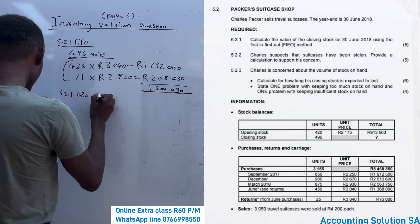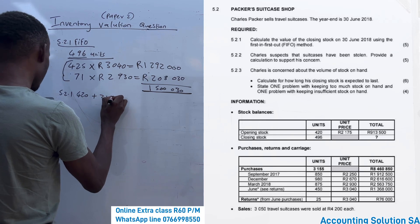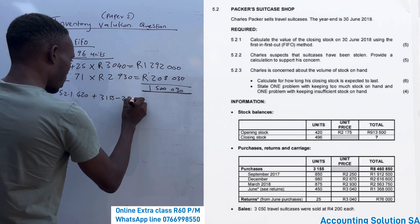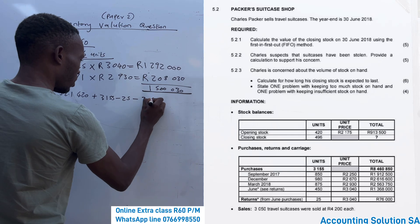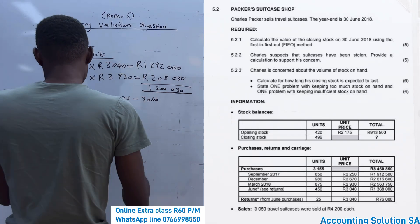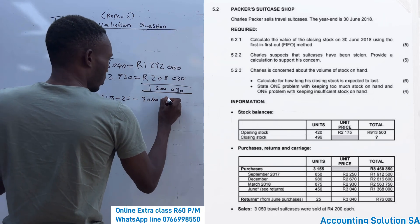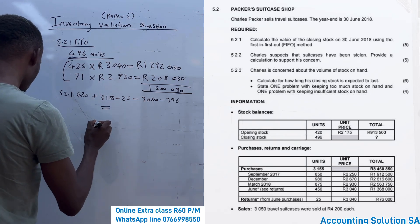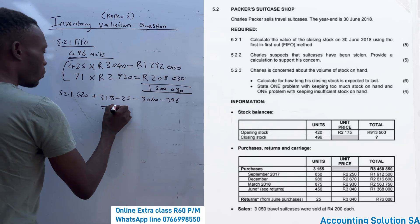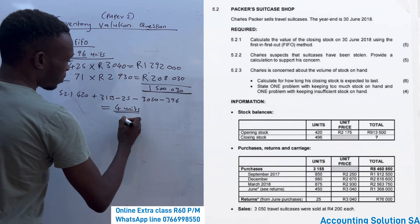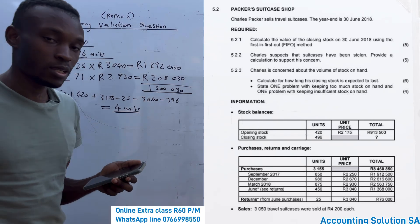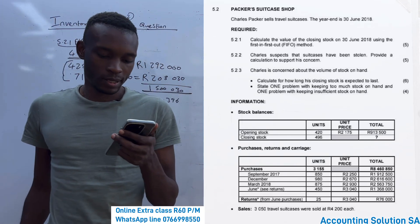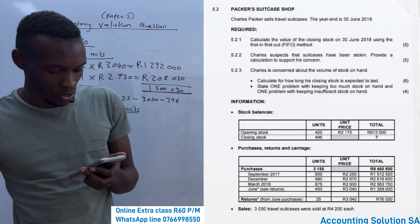Opening of 420, plus purchases of 3,155, minus returns of 25, minus sales of 3,050, minus closing stock on hand of 396. If you do this calculation, you find that there are 4 units missing, which means yes, there are 4 units that have been stolen. That is three marks.